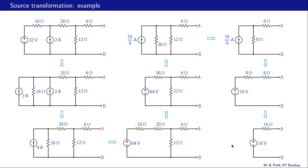Before leaving this example, let us note a couple of important points. First, our numbers have been rather friendly — for example, thirty-six ohms in parallel with twelve ohms is a calculation easily done on paper. In real life the numbers may not be as nice; for example, values like 2.7k and 2.2k would require a calculator.